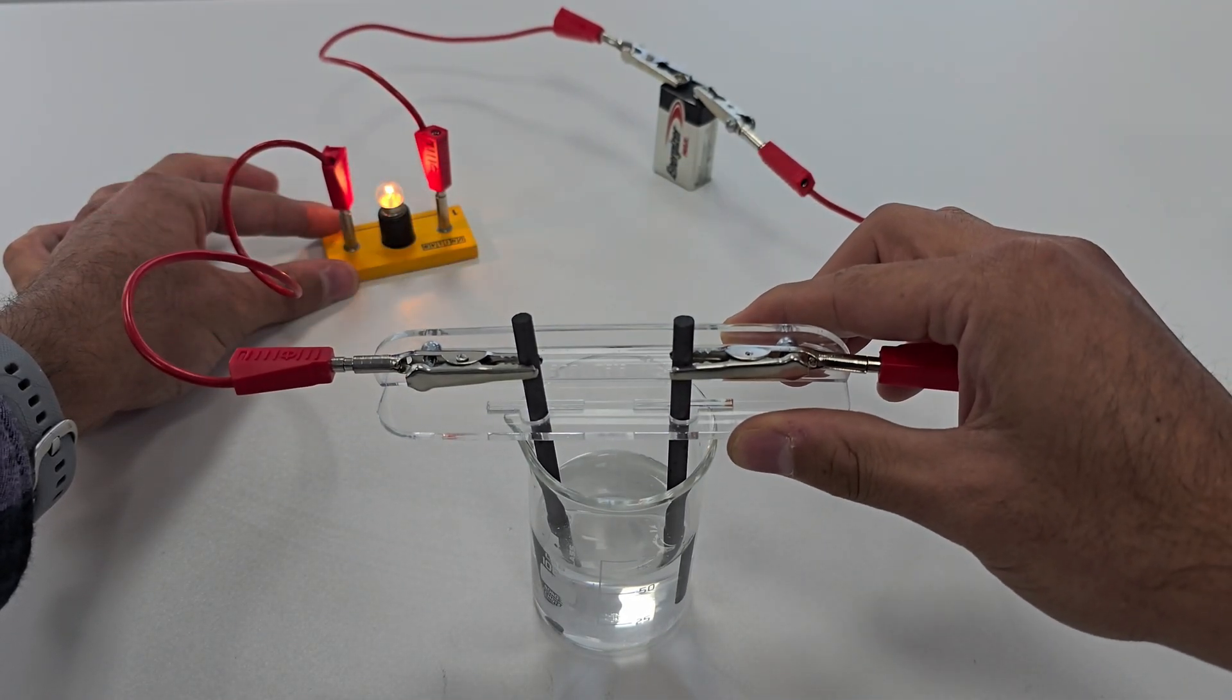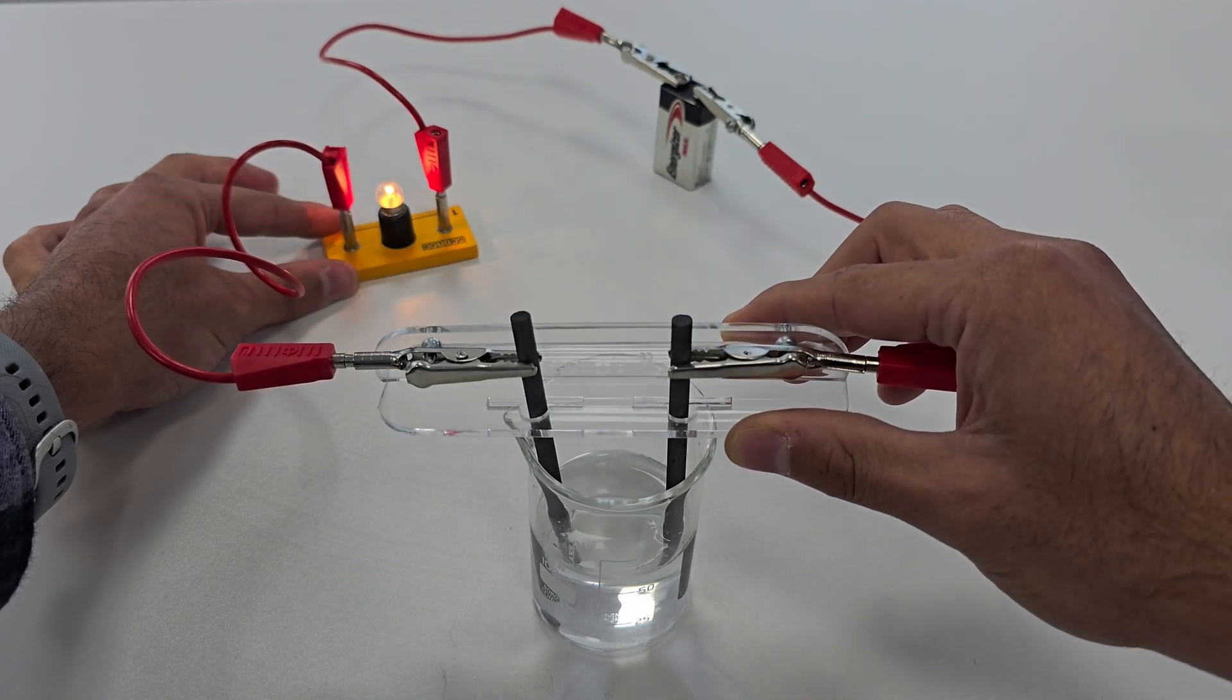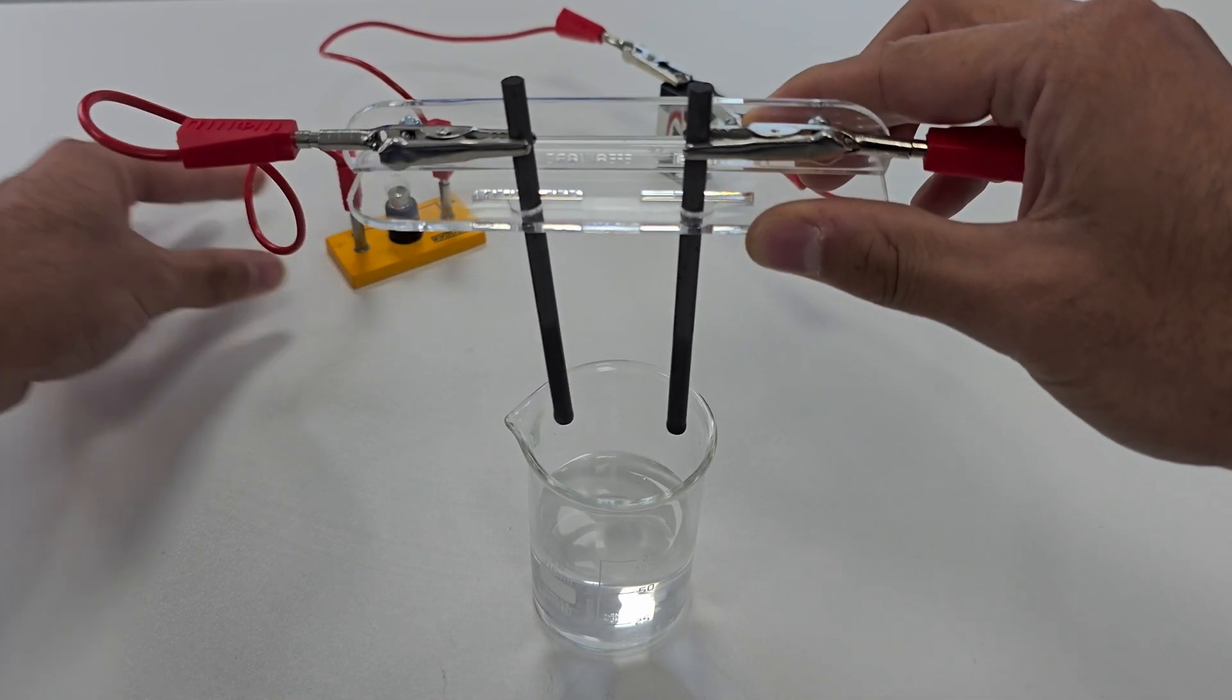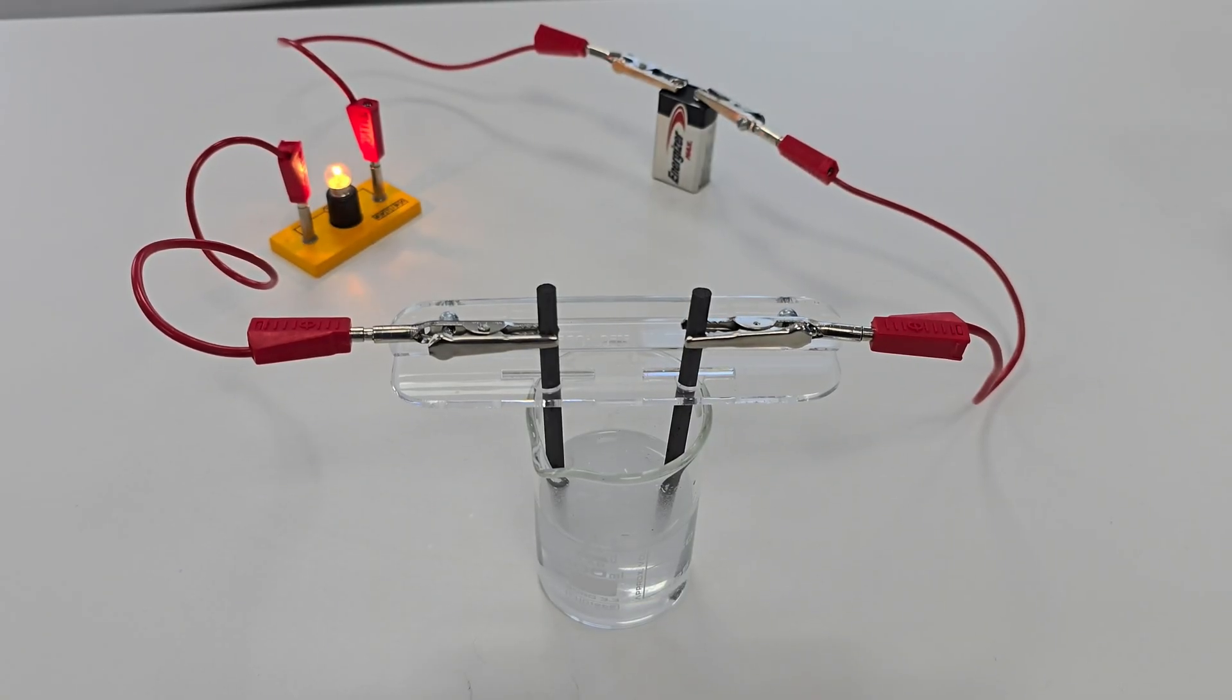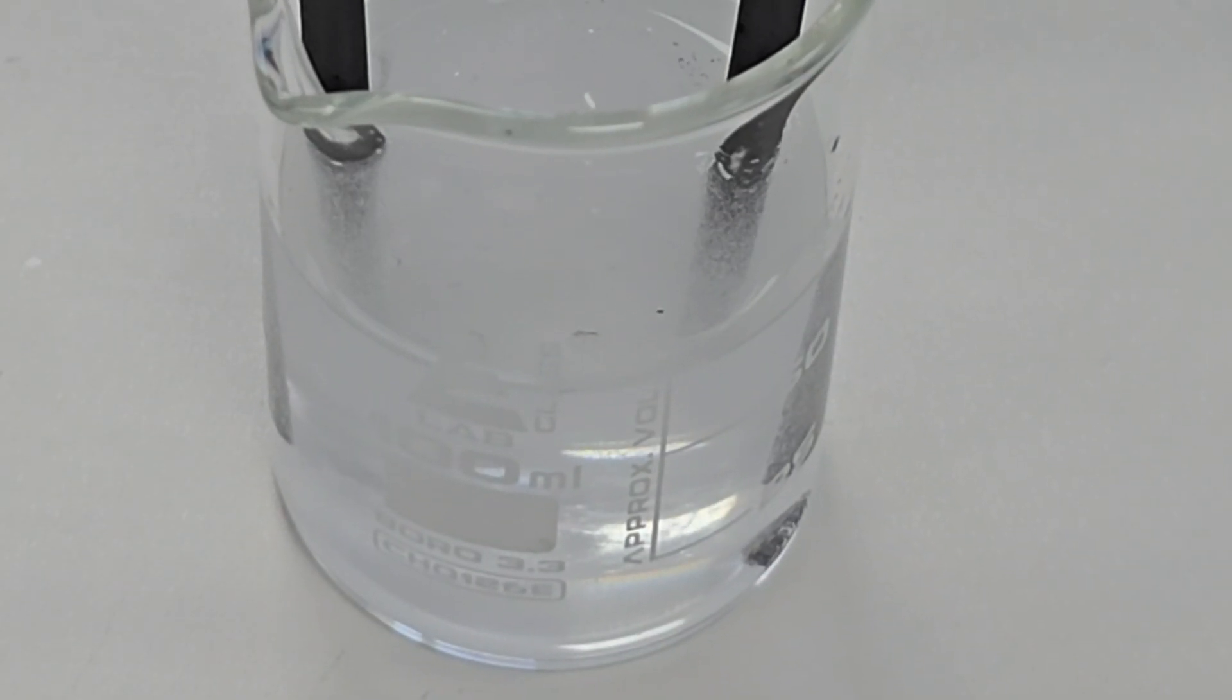In summary, solid ionic compounds do not conduct electricity because their ions are fixed in a lattice structure. However, when dissolved in water, the lattice breaks apart and the free moving ions allow the solution to conduct electricity. This is a fascinating property of ionic compounds that highlights the importance of understanding the states of matter in chemistry.